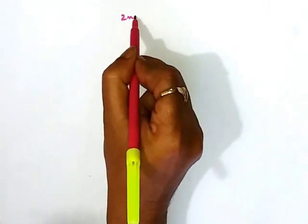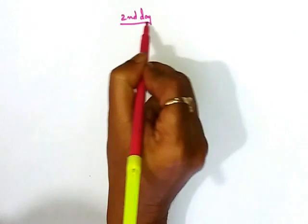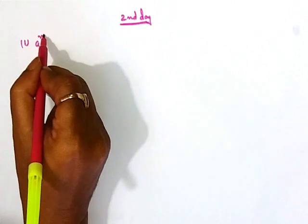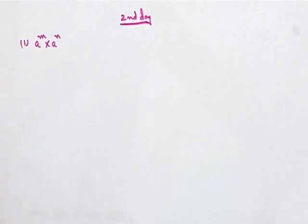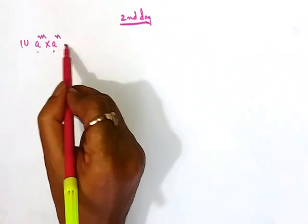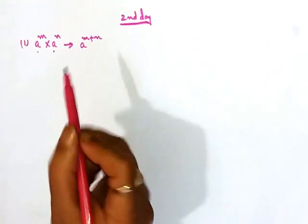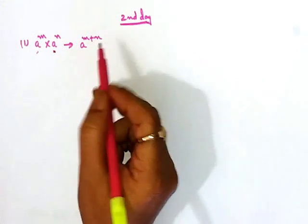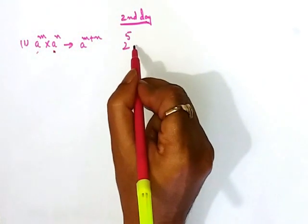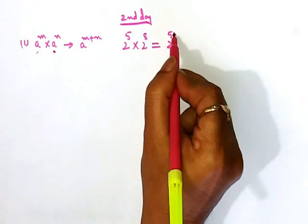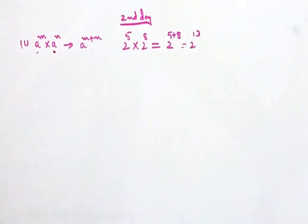Today is the second day of class. Today we will discuss surds and indices. First, let's go over some rules. Rule number one: if a to the power m multiplied by a to the power n — the bases are the same — then the result is a to the power m plus n. For example, 2 to the power 5 into 2 to the power 8 equals 2 to the power 5 plus 8, which is 2 to the power 13.